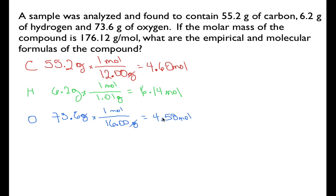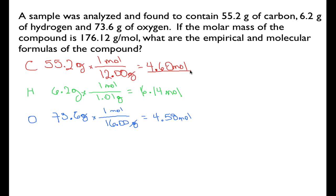We've now converted our gram values into moles. Next we want to figure out the ratio of moles of carbon to hydrogen to oxygen. The simplest way to do that is to divide each molar value by the smallest molar value. Oxygen has the smallest molar value at 4.58, so we divide all three values by 4.58.